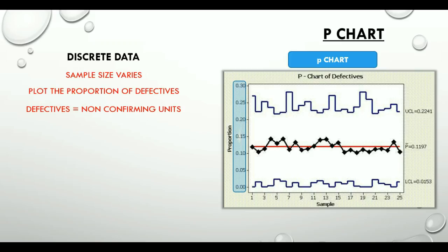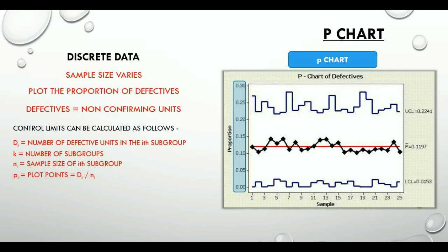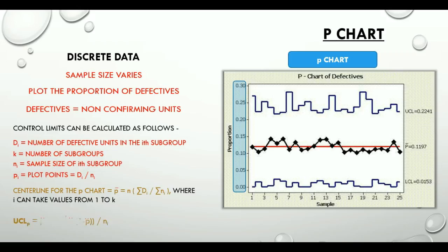To calculate the control limits for this chart, what we require is DI — the number of defective units in the ith subgroup — K, which is the number of subgroups, and NI, which is the sample size of the ith subgroup. Additionally, PI, which is the plot point, is equal to DI divided by NI. The centerline of the P chart, or P-bar, is equal to the summation of DI divided by the summation of NI, where I takes values from 1 to K. The upper and lower control limits for a P chart are P-bar ± 3 times the square root of P-bar multiplied by (1 minus P-bar) divided by NI.